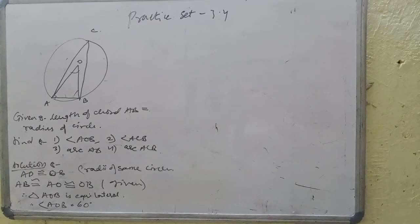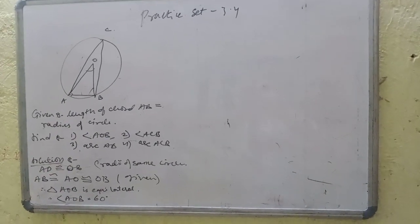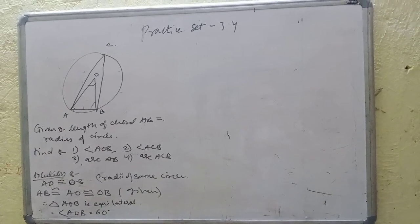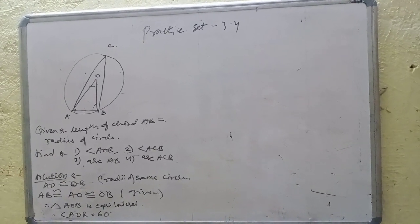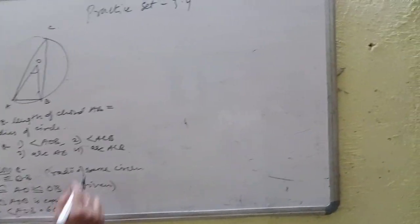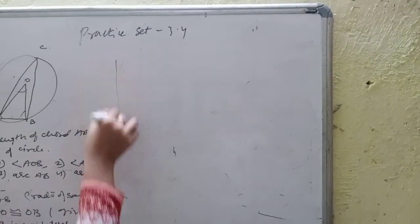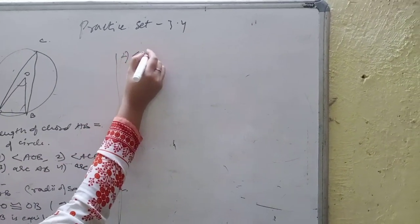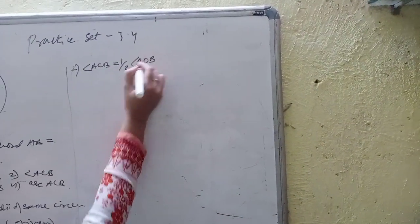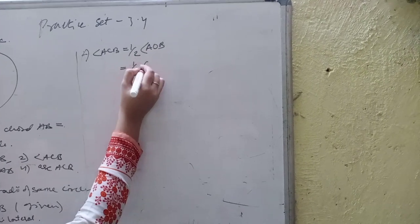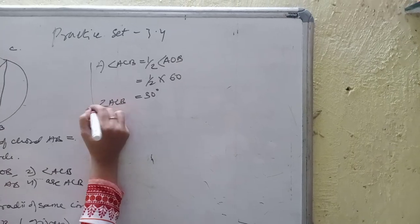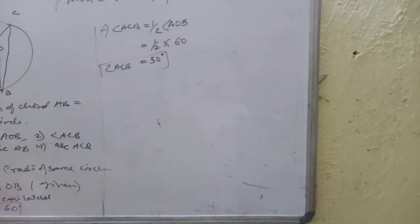Now, for the second one, angle ACB we have to find. The measure of an angle subtended by an arc at the point on the circle is half of the measure of angle by arc at the center. So angle ACB is equal half of angle AOB. Half of 60 is 30 degree. Angle ACB is 30 degree. Angle AOB is 60 degree.